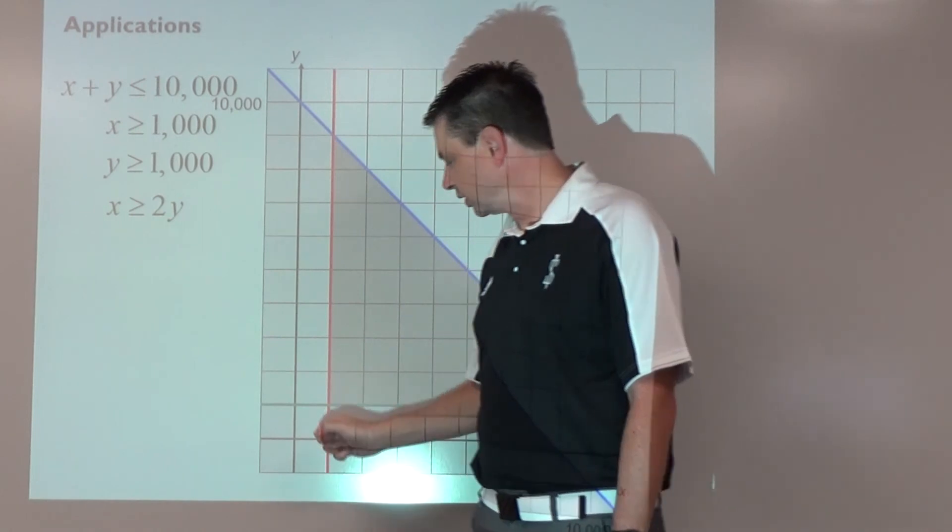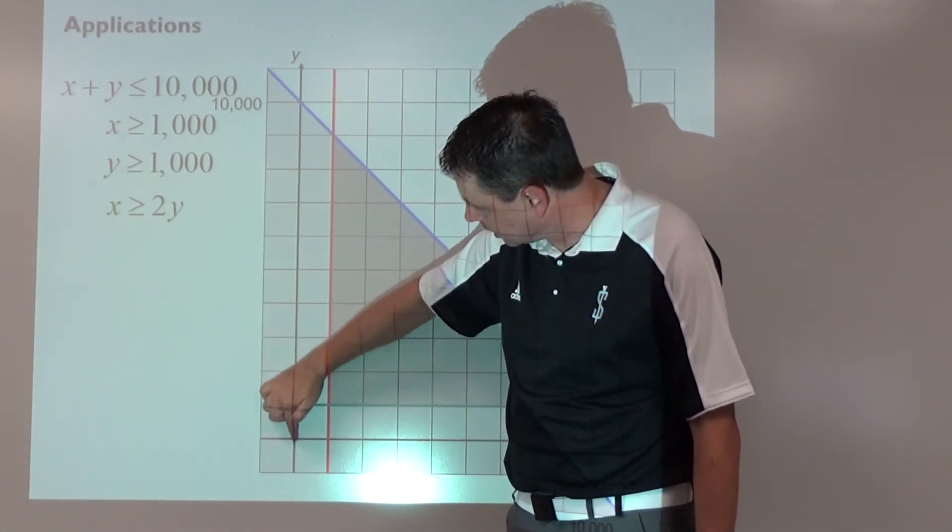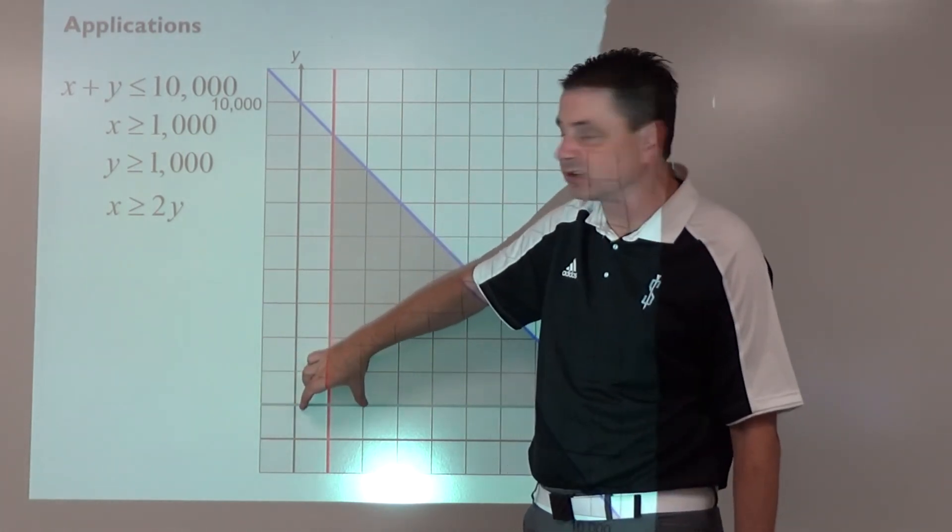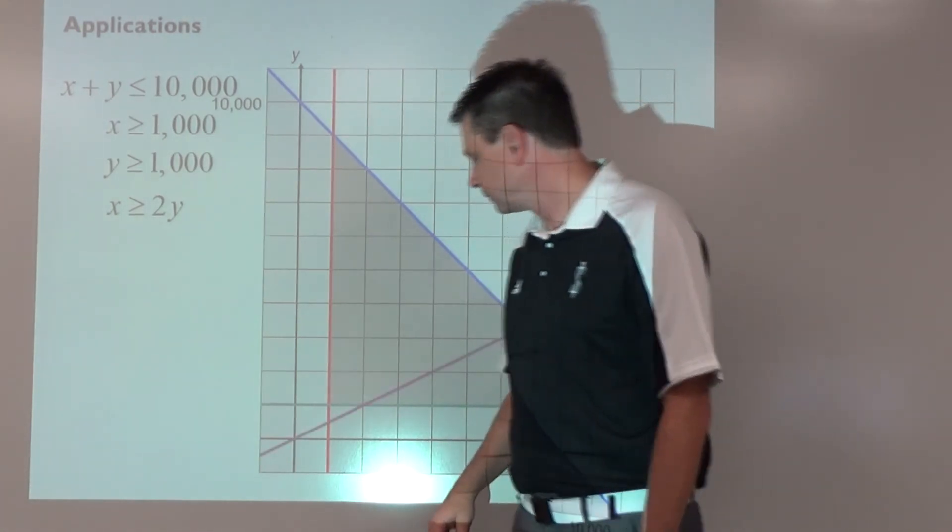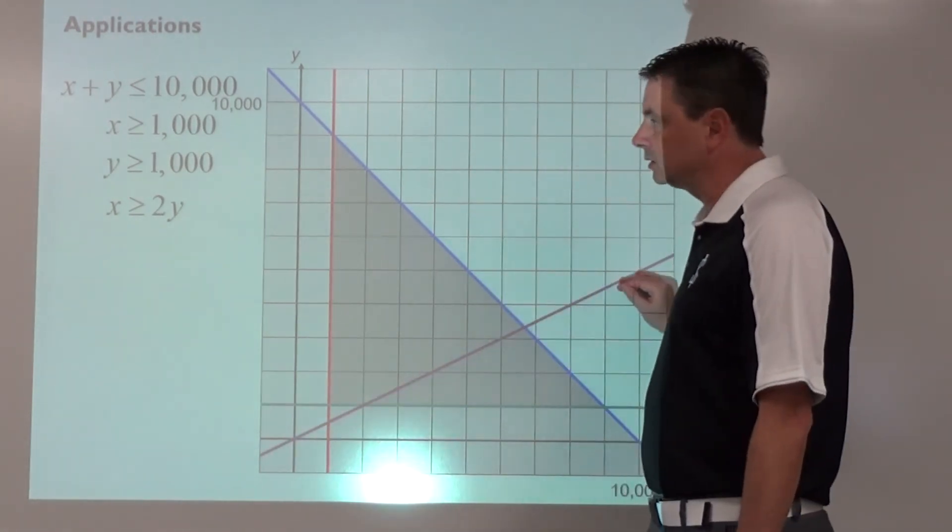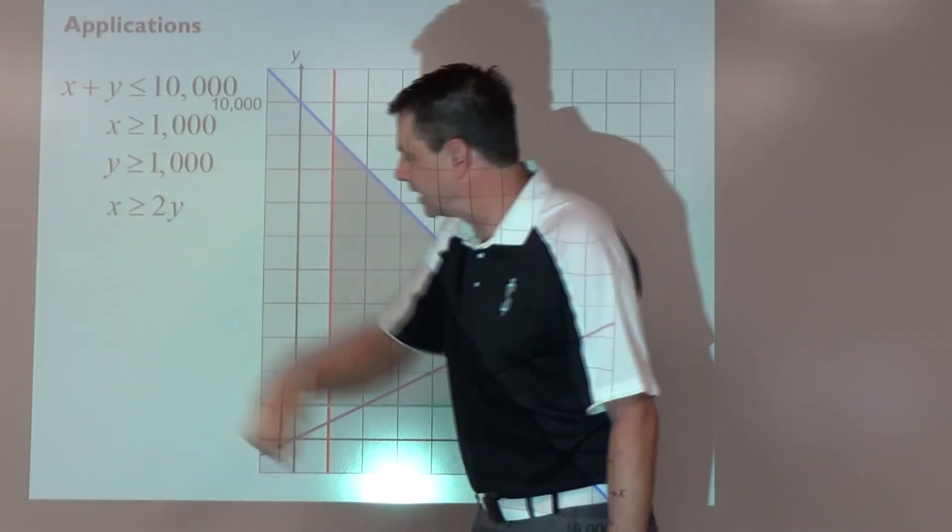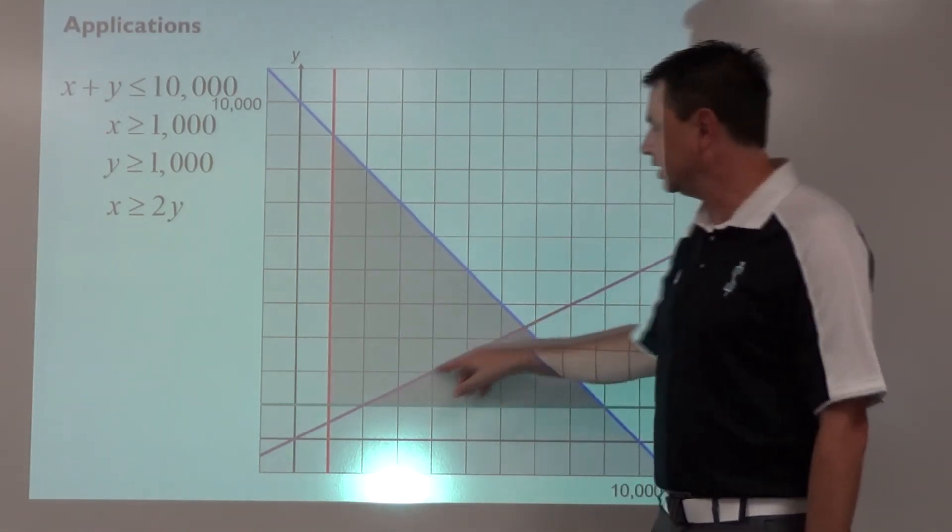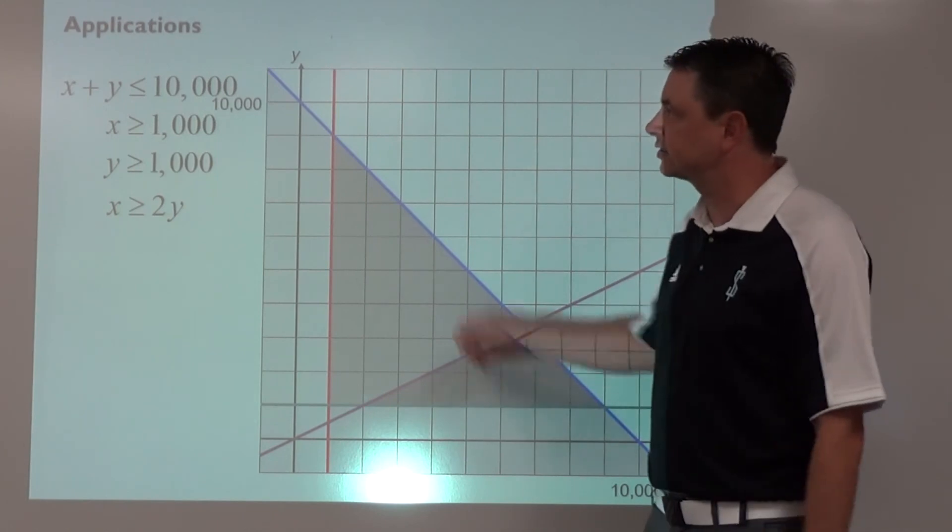Now this one's a little bit tricky because it's not in the form that we're kind of used to. We may want to solve this for y and say y is less than or equal to one-half x, with the y-intercept at zero and a slope of one-half, since $1,000 and $2,000 still creates one-half since the scale is the same in both directions. And that's how we would get that one. And as far as, if we are going y is less than or equal to one-half x, we're going to shade below on that one.